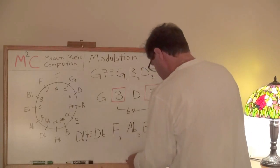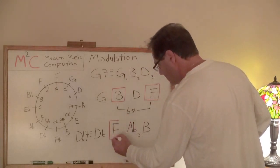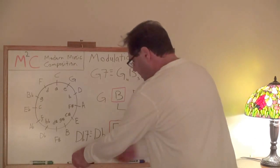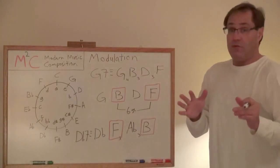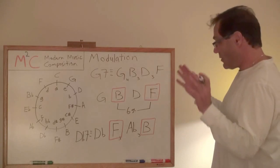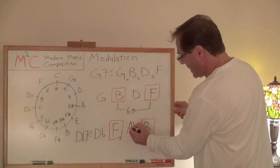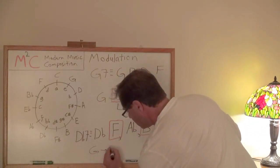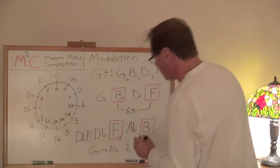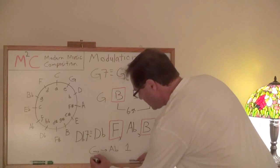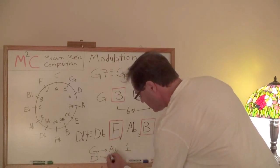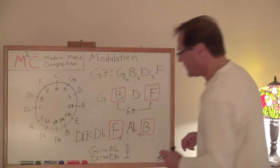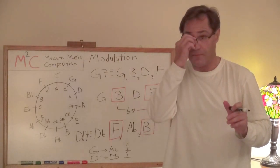So I'm just going to highlight these again. And the cool thing about this is we've only moved a total of two semitones. How is that? Well, from G to A flat is one semitone. And from D to D flat, one semitone. So it makes for very, very efficient modulation.